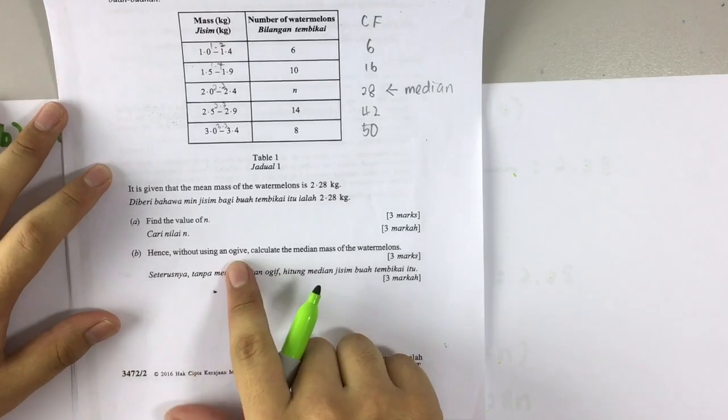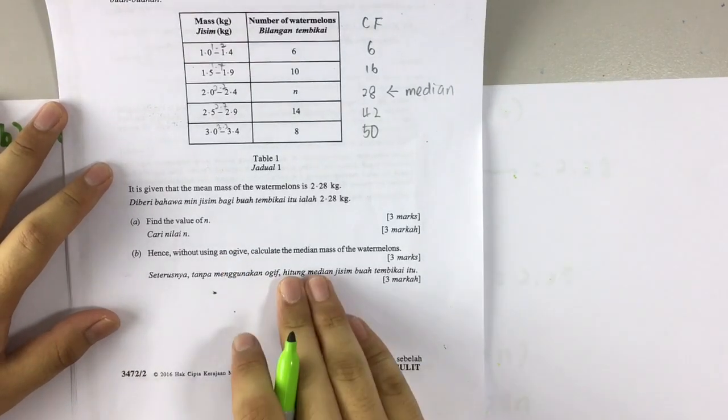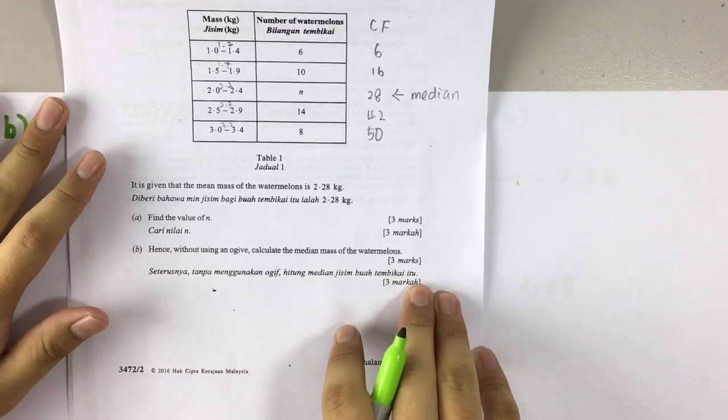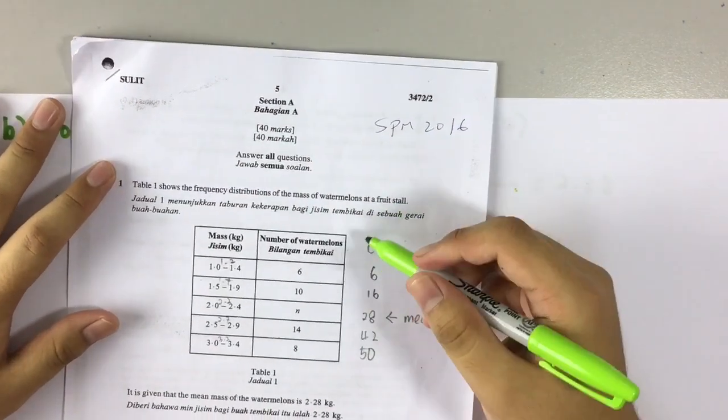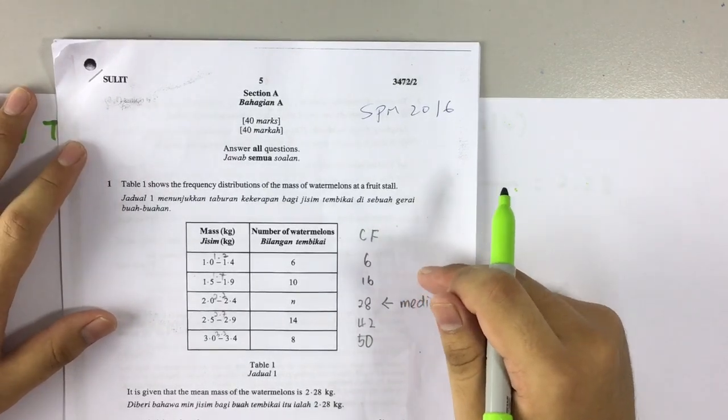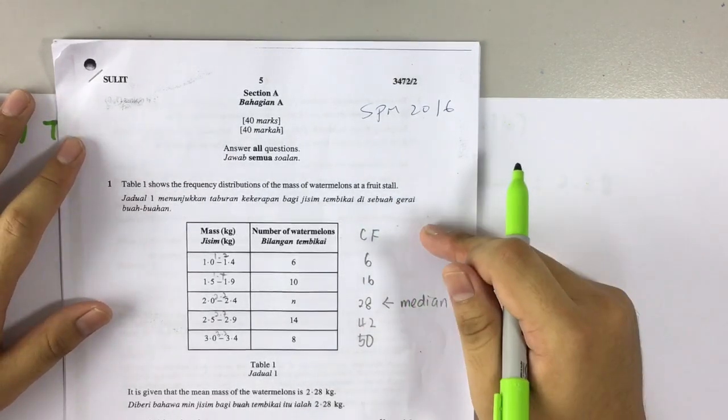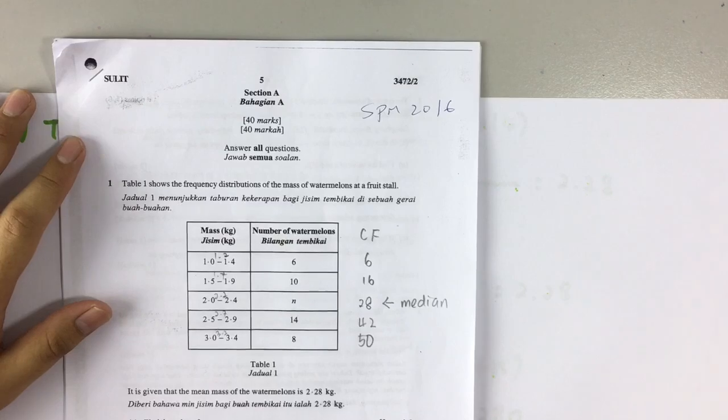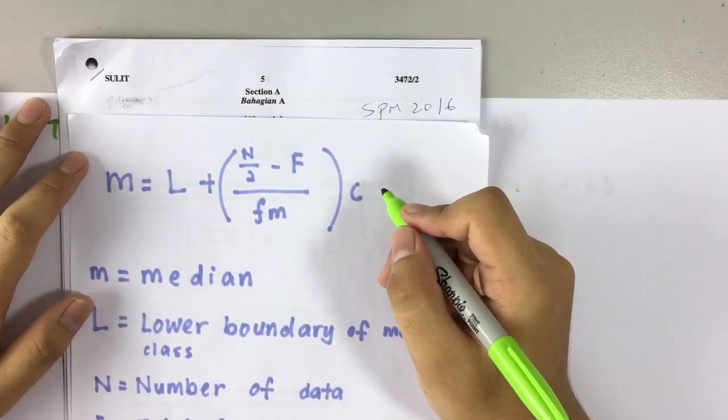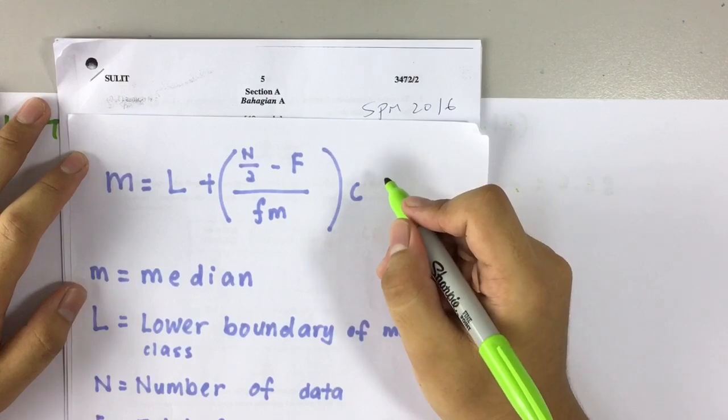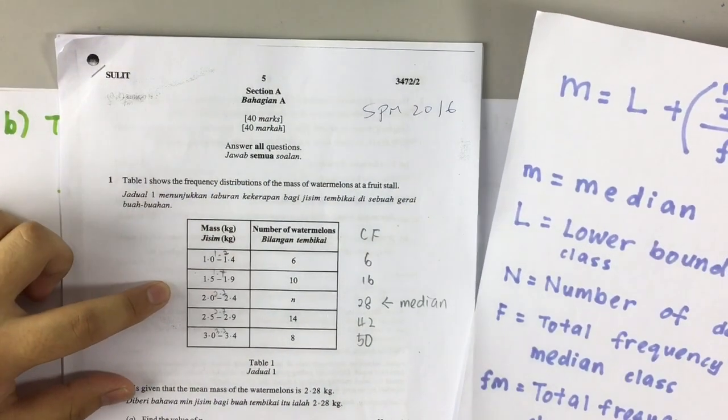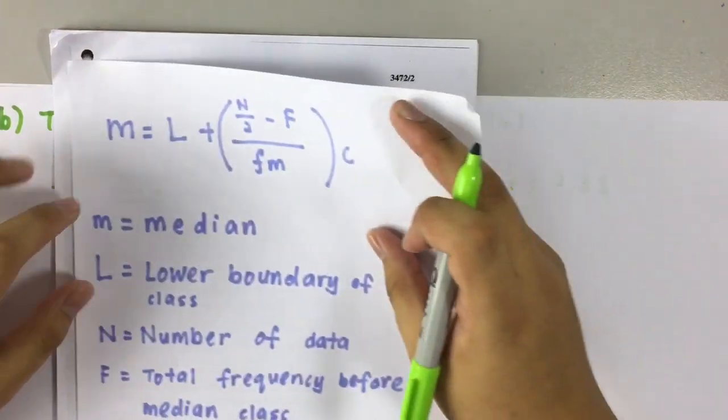Now let's see what the question requires. Part B, hence without an ogive, without drawing an ogive, calculate the median mass of the watermelon. Now, CF is cumulative frequency. This formula is for us to find median with group data. This question gives us group data, so we use this group data formula.